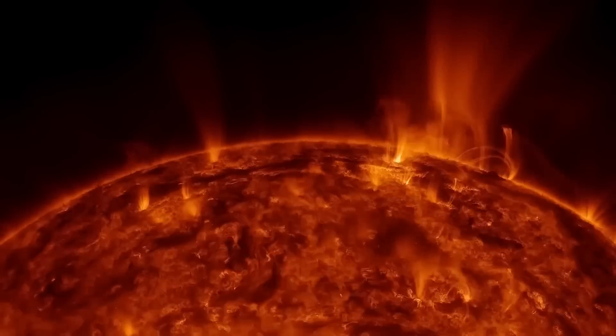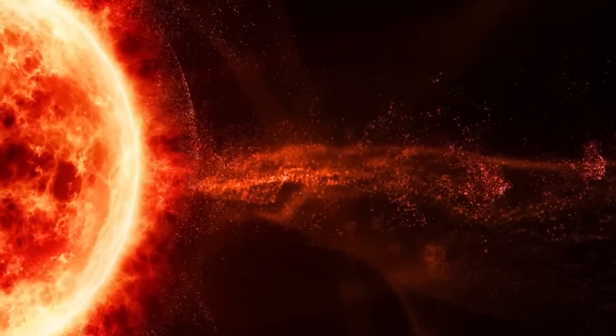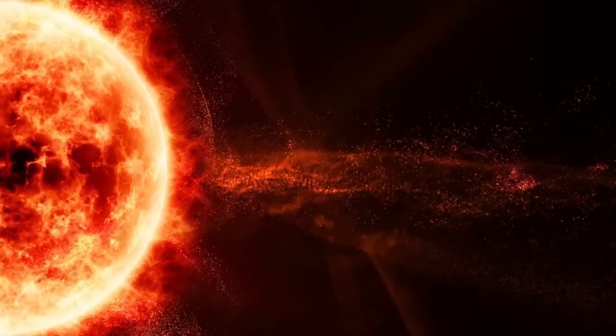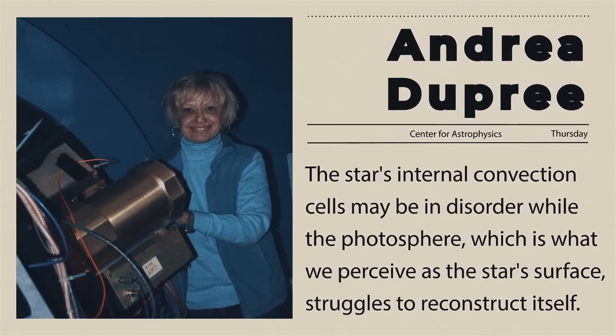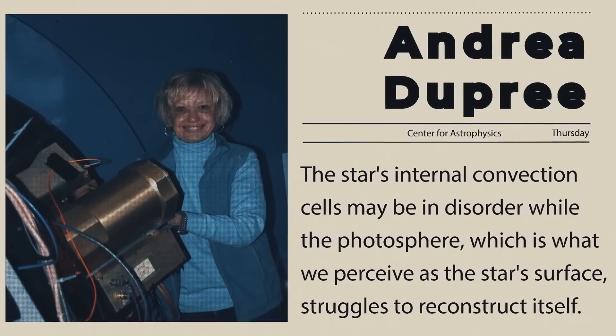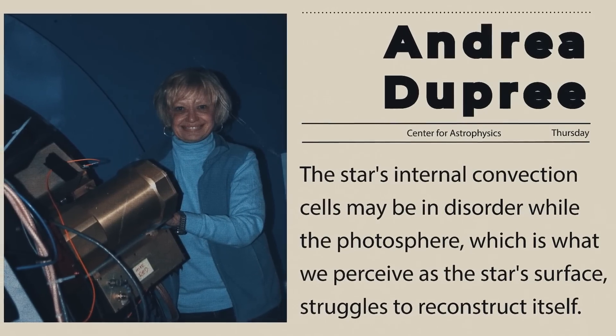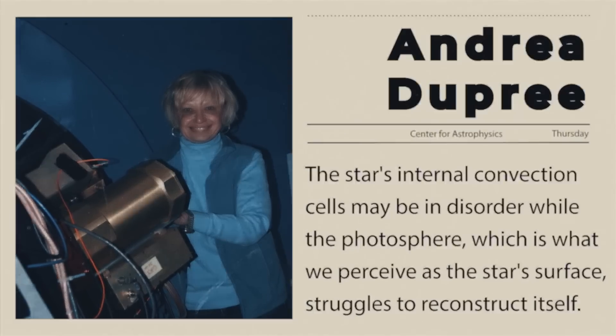The CME on Betelgeuse is unusual because it released 400 billion times more mass than a typical CME, which caused the star to tremble like a dish of gelatin dessert. According to Andrea Dupree, an astronomer at the Center for Astrophysics, the star's internal convection cells may be in disorder, while the photosphere, which is what we perceive as the star's surface, struggles to reconstruct itself.